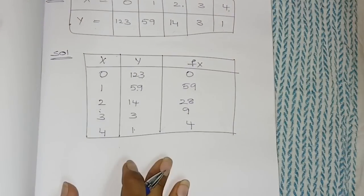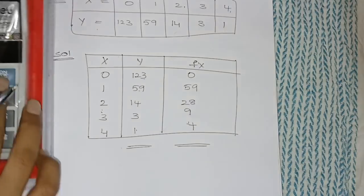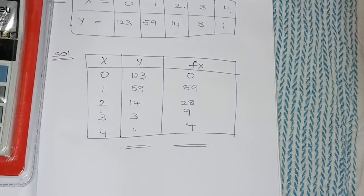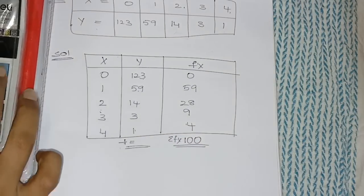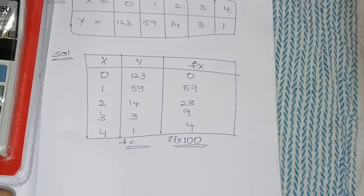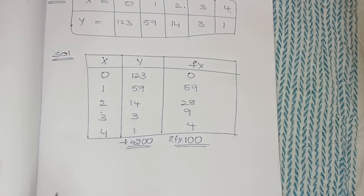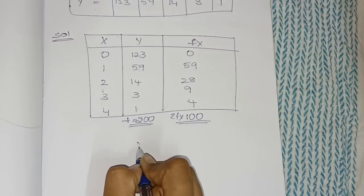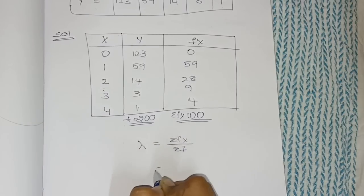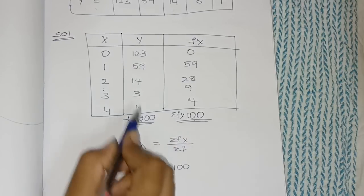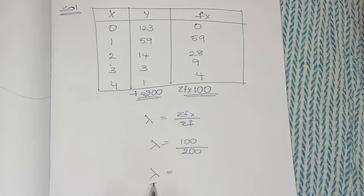For any Poisson distribution question, this is the format. Total up σfx and total up σf. So 59 plus 28 plus 9 plus 4 gives σfx = 100. And σf = 123 + 59 + 14 + 3 + 1 = 200. We are doing this step to calculate lambda. The lambda formula is σfx divided by σf, which is 100 divided by 200.